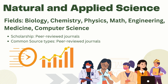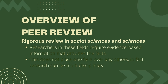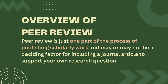Peer review of journal articles is often emphasized and more rigorous in social sciences and sciences. Researchers in these fields require evidence-based information that provides the facts they need to propose a solution, treat a patient, and so on. This does not place the importance of one field over another. In fact, research can be multidisciplinary, meaning it involves research from people in various fields to inform answers and solutions. Peer review is just one part of the process of publishing scholarly work and may or may not be a deciding factor for including a journal article to support your own research question.